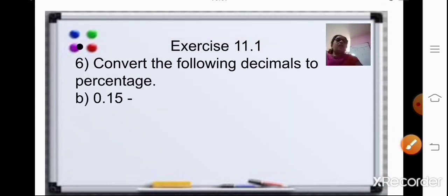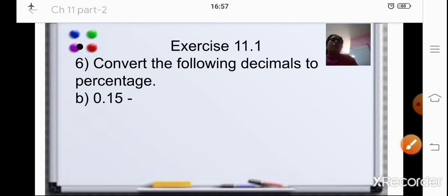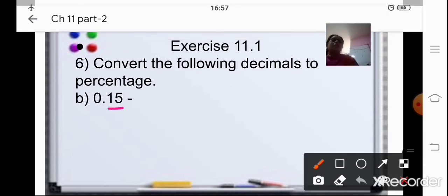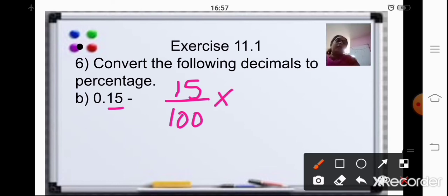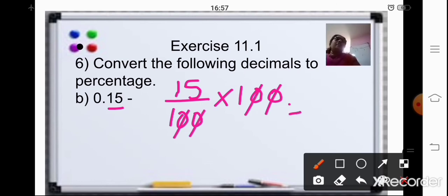Now let us start with our exercise sums. Question number 6: convert the following decimals to percentage. So what we will do is, first we will change these decimals into fractions. After the decimal point, two places. So your fraction will be 15 upon 100. The second step is to multiply it by 100. You can easily cancel the two zeros. So your final answer is 15%.